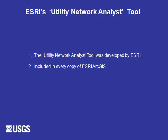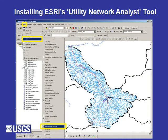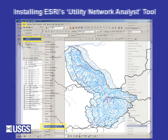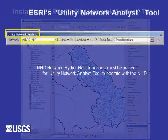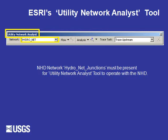The Utility Network Analyst tool was developed by ESRI and is included in every copy of ArcGIS. To open it, there are various methods. In this example, I'm highlighting the View button in the main menu, selecting Tools from the drop-down menu, and placing a checkmark to the left of the Utility Network Analyst tool. I may also hover my cursor over the gray portion of the main menu, mouse-click, and again place a checkmark to the left of Utility Network Analyst. Both methods should display the Utility Network Analyst tool.